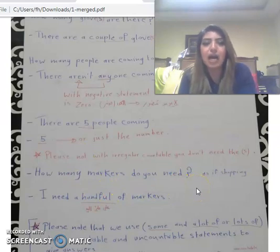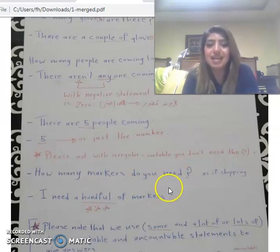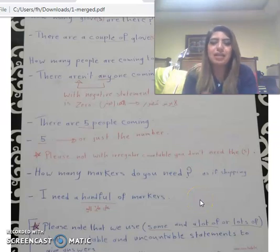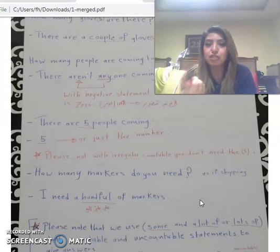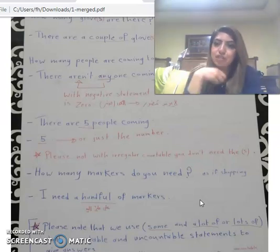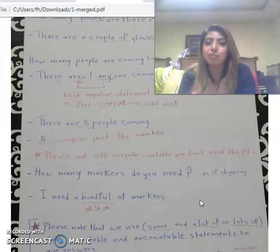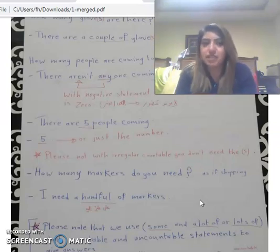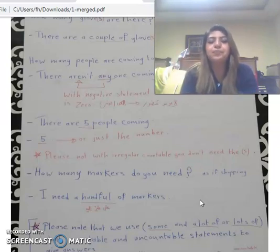Another question: 'How many markers do you need?' — as if you were going shopping. The answer: 'I need a handful of markers.' The quantifier 'a handful of' expresses an approximate small amount. So we have used different quantifiers: 'a couple of', 'a few', 'any' for negative, the exact number, and 'a handful of'.